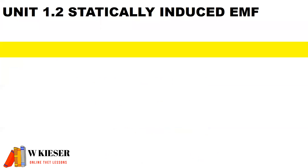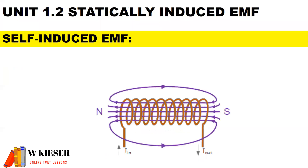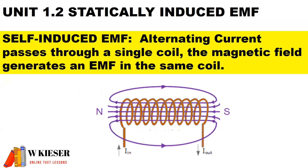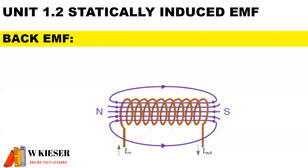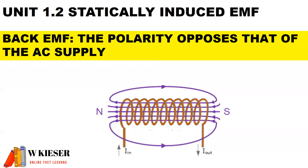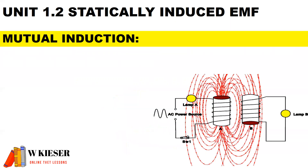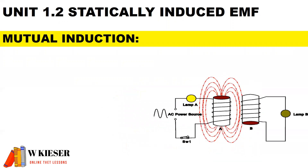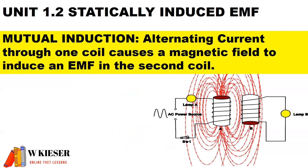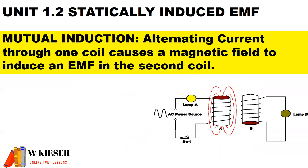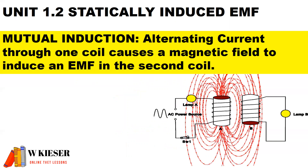Moving on to statically induced EMF — specifically self-induced EMF. An alternating current passes through a single coil; the magnetic field generates an EMF in the same coil. This is also known as back EMF, which has a polarity that opposes that of the alternating current supply. For mutual induction, alternating current through one coil causes a magnetic field to induce an EMF in a second coil.